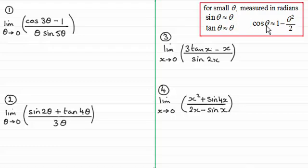The cosine of say two theta, that would be approximately the same as one minus two theta all squared divided by two and so on.